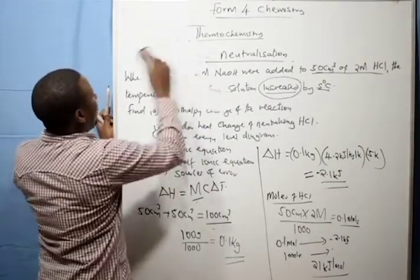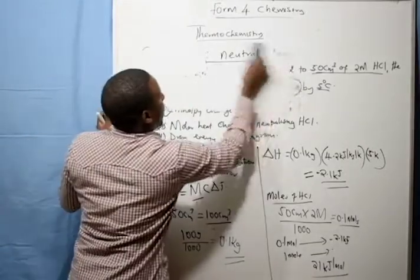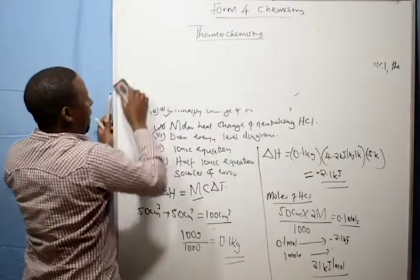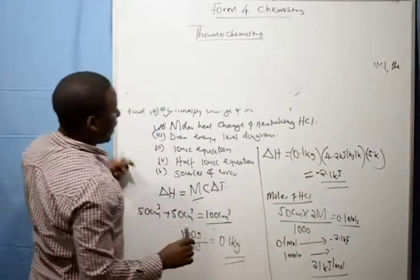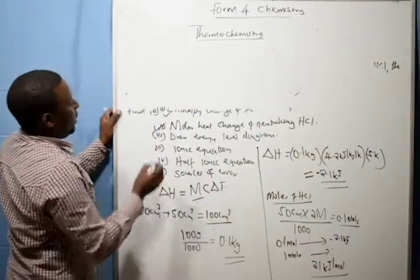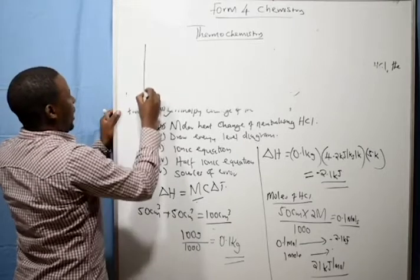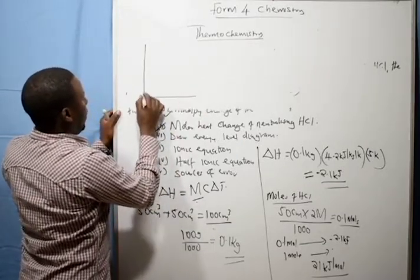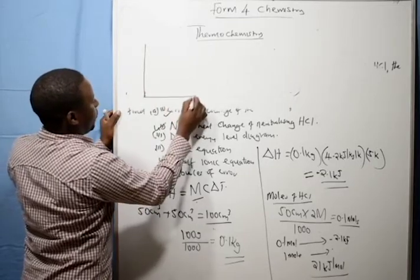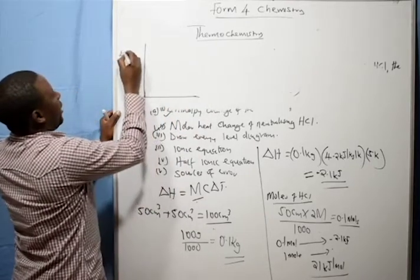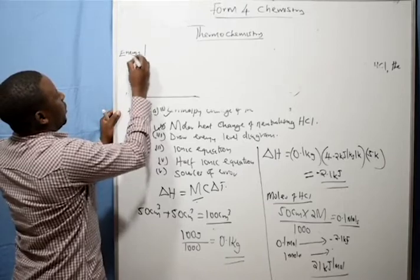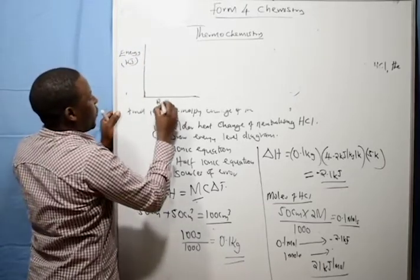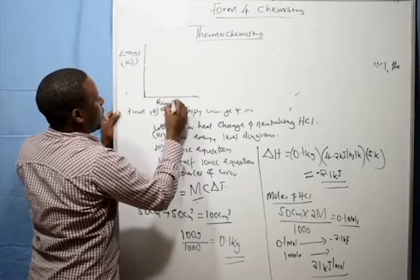Then onto the next question: we are drawing the energy level diagram. We draw the energy level diagram. To do that, you draw the X and Y axis. This is energy in terms of kilojoules. This is reaction progress.